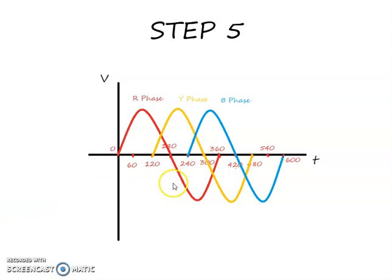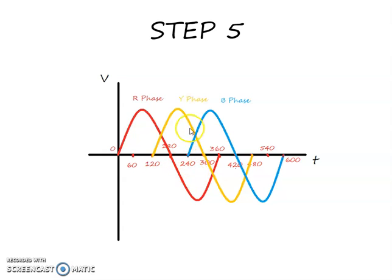In the next step we draw the third waveform — the B-phase waveform — which starts at 240 degrees, that is 120 degrees from the Y-phase waveform. It goes to a peak, reaches zero after 180 degrees — 240 plus 180 is 420 — and then at another 180 degrees, at 600, it reaches zero again. So now we have a three-phase waveform.